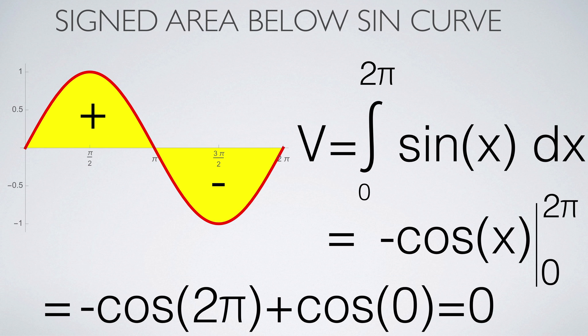If we compute the same integral from zero to 2π, we get zero. How come? Isn't the area positive? Yes, but the integral is a signed area. The region below the curve is counted negatively. The positive and negative areas cancel.